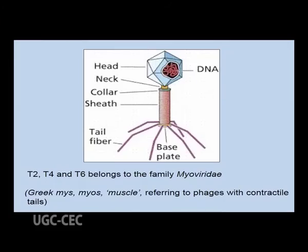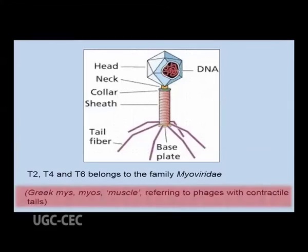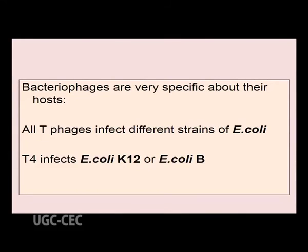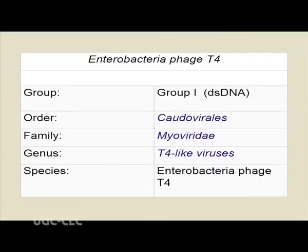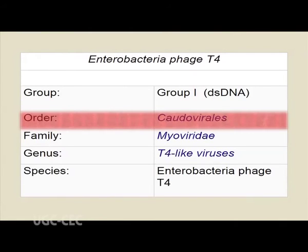T-even bacteriophages T2, T4, and T6 belong to the family Myoviridae. The Greek word 'myos' means muscle, and since the tail is contractile it resembles muscle. Bacteriophages are very specific about their hosts; T4 infects very specific hosts like E. coli K12 and strain B. T4 belongs to Baltimore group one, having double-stranded DNA as its genome, and belongs to the order Caudovirales and family Myoviridae.